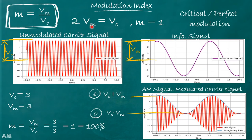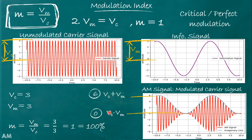Case 2: vm = vc, so m = 1 — perfect or critical modulation. The unmodulated carrier has peak vc = 3, and the information signal now has peak vm = 3. Modulation index = 3/3 = 1, so modulation depth is 100%. Maximum value of the peak of the AM signal is vc + vm = 3 + 3 = 6, and minimum value is vc − vm = 3 − 3 = 0.